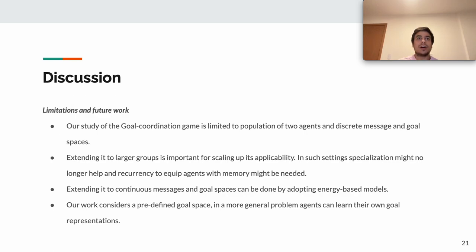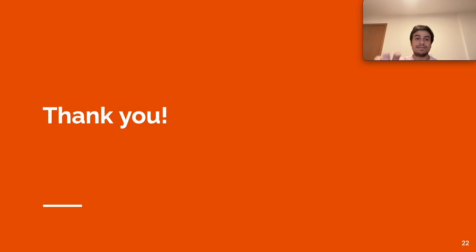Discussion: the limitations of this work and future work. Our study of the goal coordination game is limited to a population of two agents and discrete message and goal spaces. Extending it to larger groups is important for scaling up its applicability. In such settings, we argue that specialization might no longer help and recurrency to equip agents with memory might be needed. Also, extending it to continuous messages and goal spaces can be done by adopting energy-based models. And finally, our work considers a predefined goal space. In a more general problem, agents can also learn their own goal representations. We believe that the Dec-IMSAP can be of interest in real-world scenarios, such as robotics for disaster rescue or extraterrestrial exploration. It allows to consider a population of goal-conditioned reinforcement learning agents that learn how to achieve a wide diversity of cooperative tasks in a fully autonomous manner. Thank you.